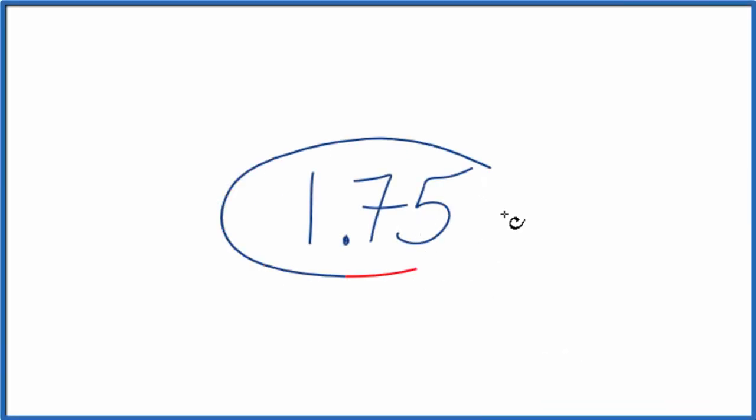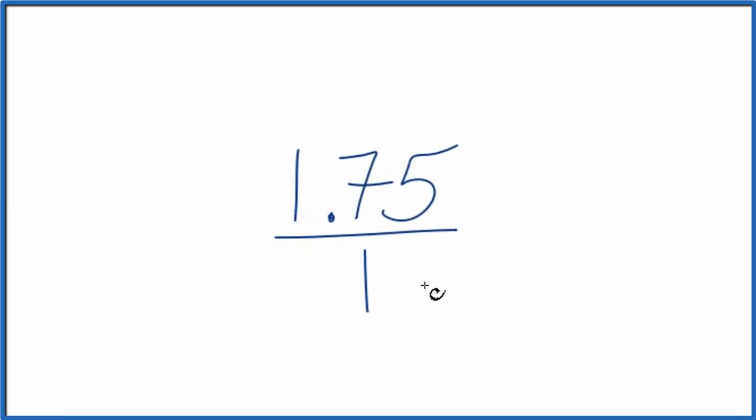Let's convert the decimal 1.75 to an improper fraction and then to a mixed number. So here's how we do this. What we can do first is call this 1.75 over 1. It's still 1.75 because we're just dividing by 1. Now we have the start of a fraction.